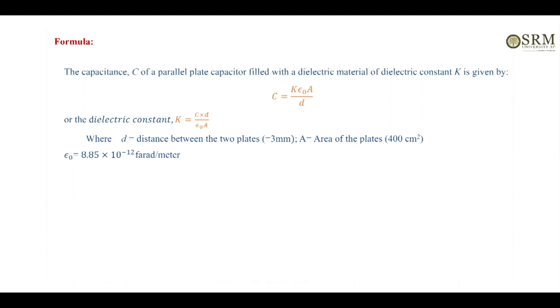Formula: dielectric constant K equals cd by epsilon naught A, where C is capacitance of parallel plate capacitor. d is distance between parallel plates, d equals 3 millimeter.